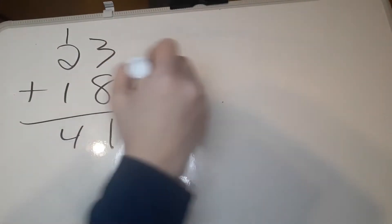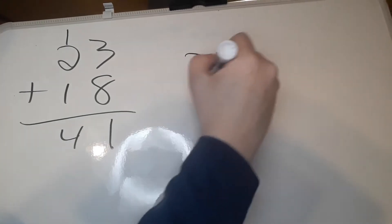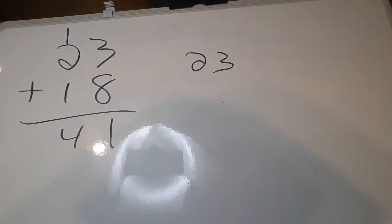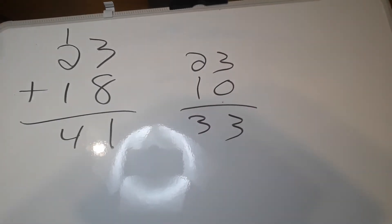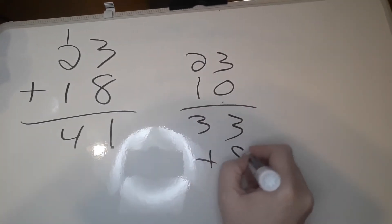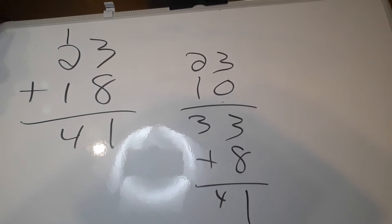We take a number, I'll take 23. Now we're going to be adding 18 to it, so let's add 10 first. Now we can add the 8 and get our 41.